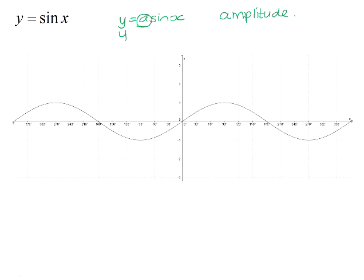For example, if we sketch the graph y equals 2 sin x, the graph won't stretch from negative 1 to positive 1 as it does on the parent graph, but it will stretch from negative 2 to positive 2. The maximum point at 90° stretches to 2, and the minimum point at 270° stretches to negative 2. So changing the a value has the effect of stretching the sin graph.